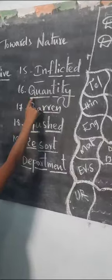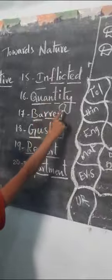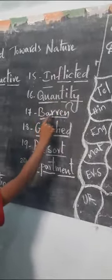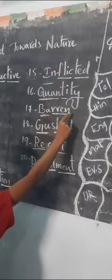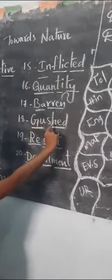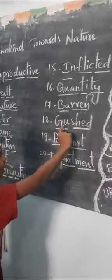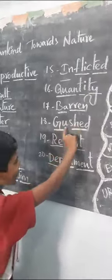Quantity. Q-U-A-N-T-I-T-Y. Point. Barrel. B-A-R-R-E-N. Barrel. Gushed. G-U-S-H-E-D. Gushed.